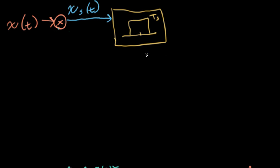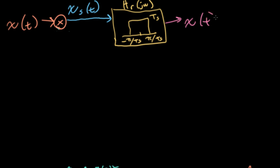Assuming that criterion is satisfied, we can put our signal back together. Our reconstruction process includes passing the Dirac delta sampled signal through a low-pass filter with height TS and a cutoff at π over capital TS. Let's call this frequency response big H sub R of j omega. Assuming the Nyquist criterion was satisfied, we'll happily get x of t back out, which is pretty remarkable.